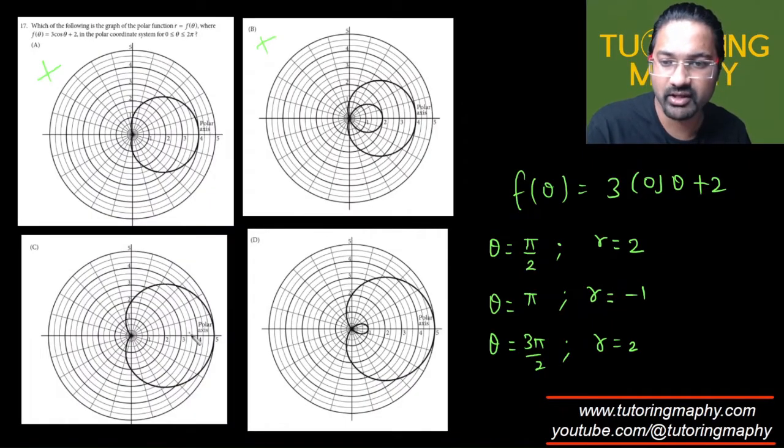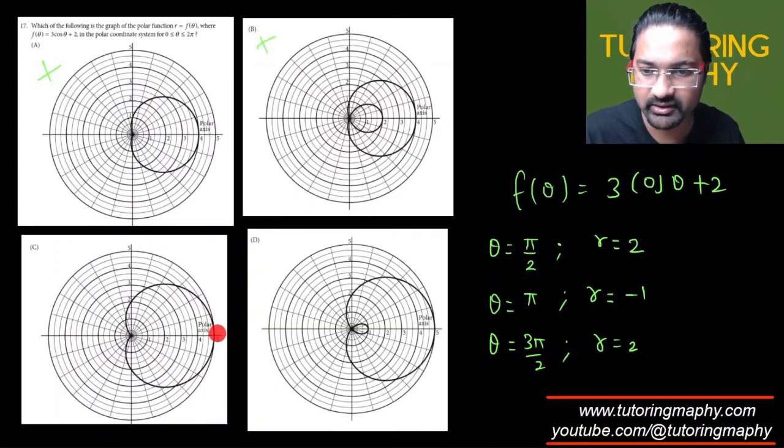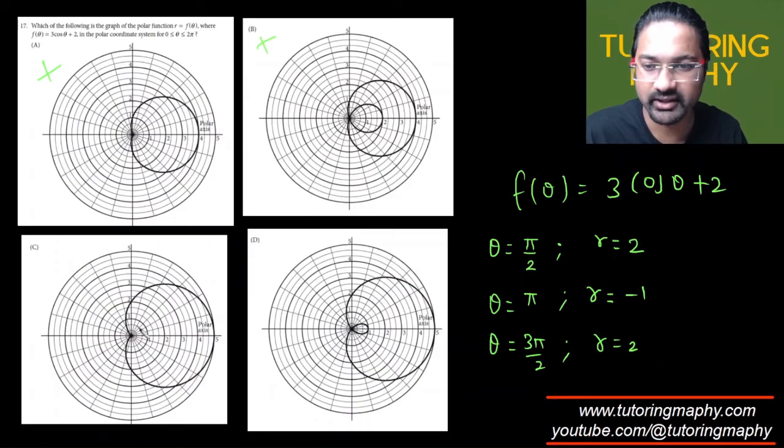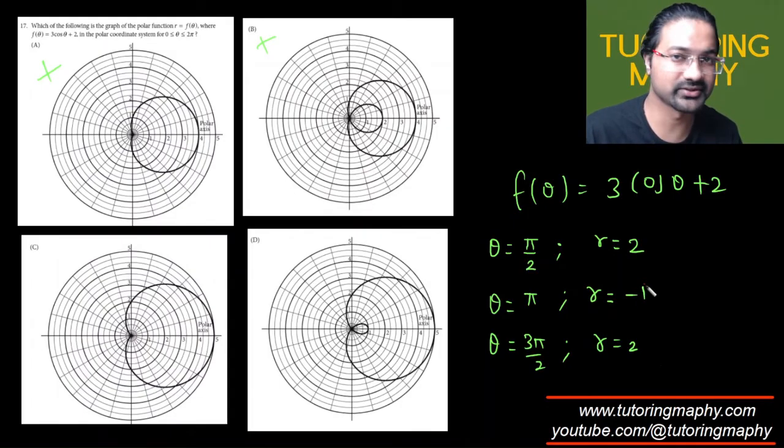But if I'm at π, my value is -1, so |r| = 1. Here you can clearly see that if you are at π, because π is just the horizontal line, it is either 0 or 5, which is not correct because at π it should be 1. The absolute value is 1, which clearly is option D. Its distance from the pole is 1.